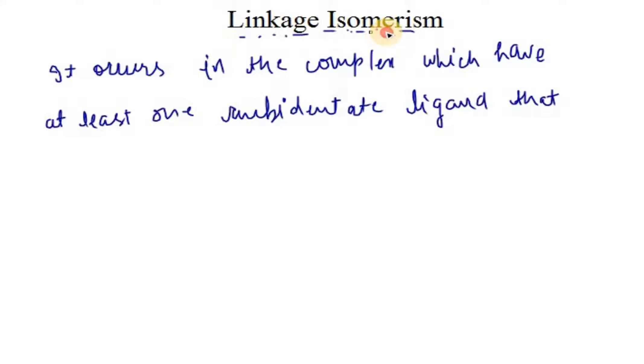In this video we are going to talk about linkage isomerism. It occurs in complexes which have at least one ambidentate ligand that can coordinate with the central metal atom or ion through either of two donor sites.